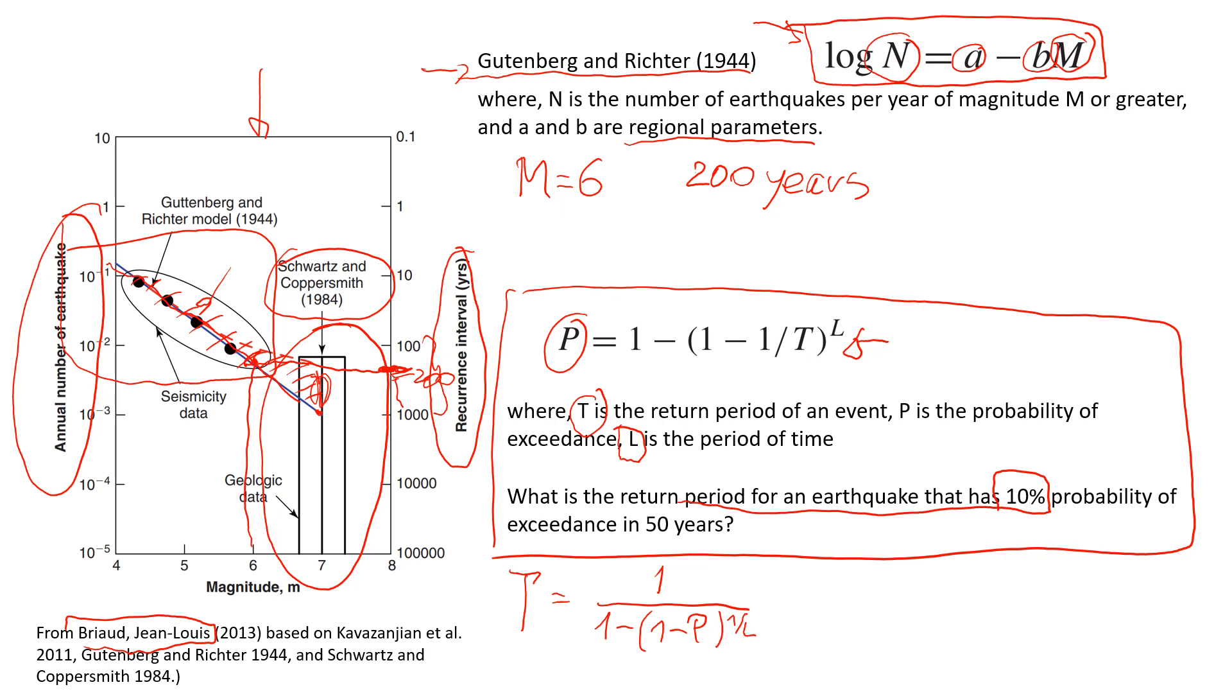So now if we put numbers here, we have 10% of probability. So here we have 1 minus 1 minus P. So the probability is 10%, I'm going to write 0.1. And it's over 50 years. So L will be 50 years, 1 divided by 50. So that will approximately give us 475 years.